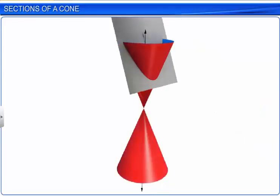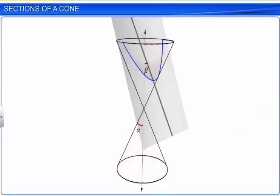If the plane intersects one nappe of the cone such that angle beta is equal to angle alpha, the resulting conic section is a parabola.